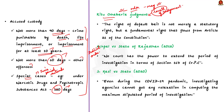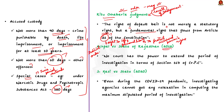In the Ritu Chabariya judgment, the Supreme Court held that the right of default bail is not merely a statutory right but a fundamental right that flows from Article 21 of the Constitution, to protect the accused from the unfettered and arbitrary power of the state. The Supreme Court had previously recognized this as an indefeasible right flowing from Article 21, which guarantees the right to life and personal liberty. Not just in Ritu Chabariya but in other cases too — for example, in Achpal versus State of Rajasthan 2018, the court held that no court has the power to extend the period of investigation under Section 167 of CrPC.